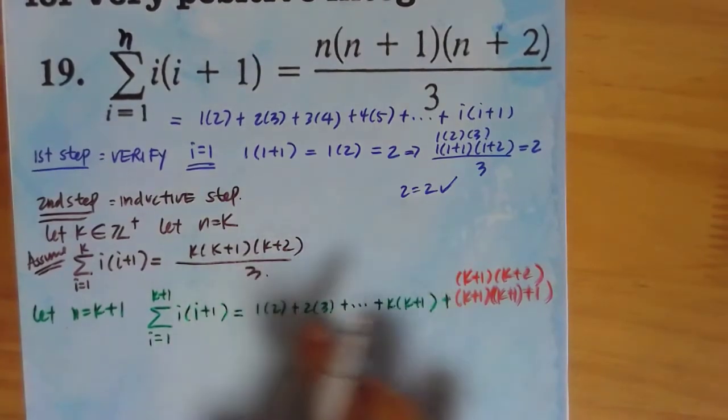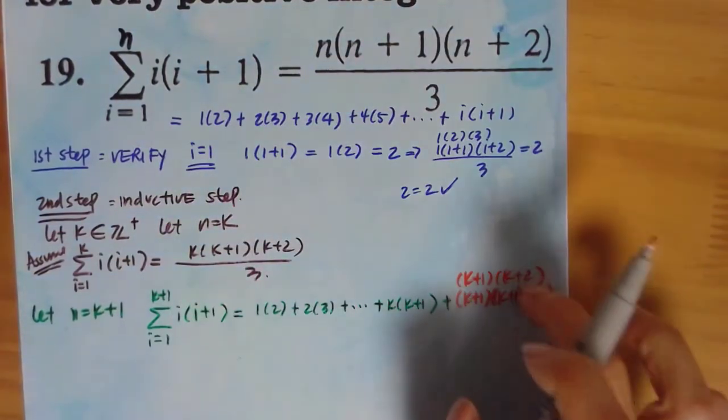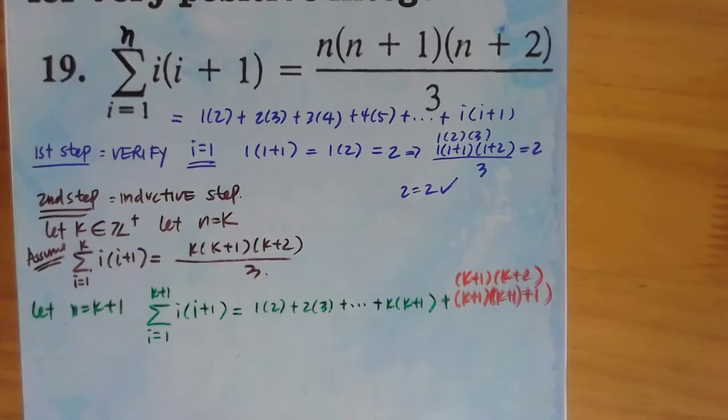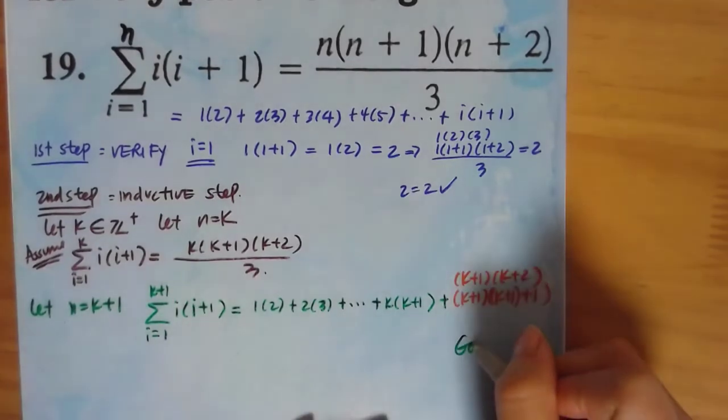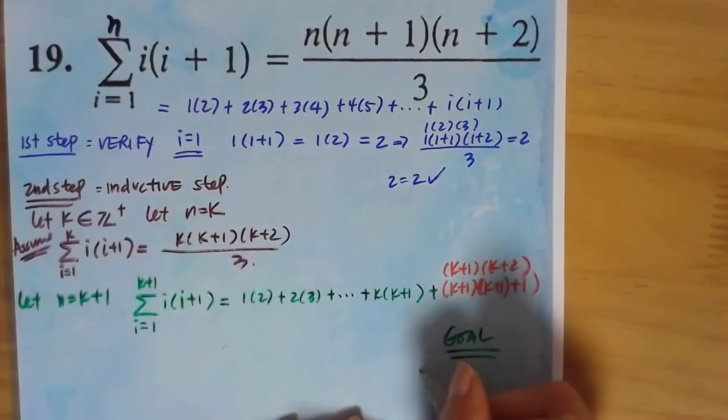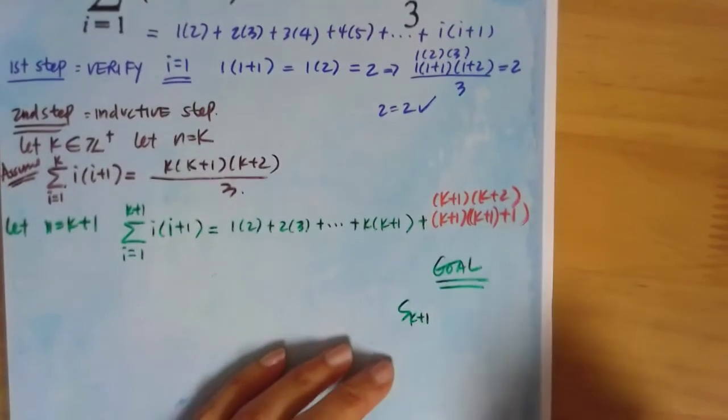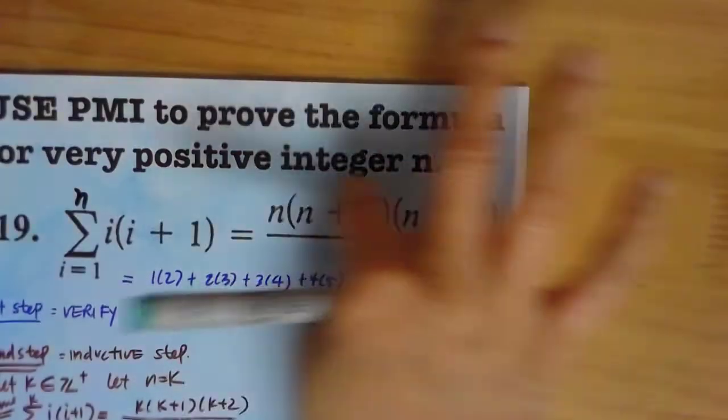So remember, this came, this was already verified from the first few steps and we're trying to show that. So you know what we're going to do? We're going to write our goal here. Let's write our goal. Remember how we always write our goal? Let's write our goal. Well, if we let s k plus 1, that's what our sum next k plus 1 is. Remember, this is the original formula.